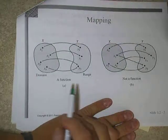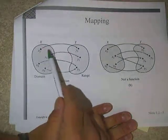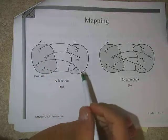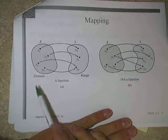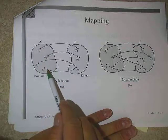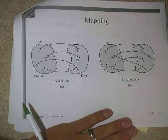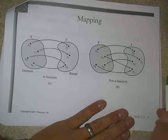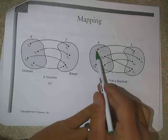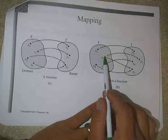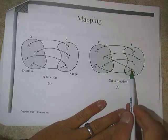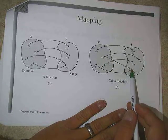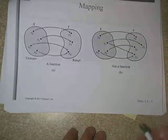Looking at mapping diagrams: if I have a function with four different values of x in my domain and only three elements in my range, this qualifies as a function because every x goes to exactly one y. In the non-function example on the right, x2 goes to y2, but x1 goes to both y1 and y3 — that's the problem. We can't have something in the domain go to two different y coordinates.